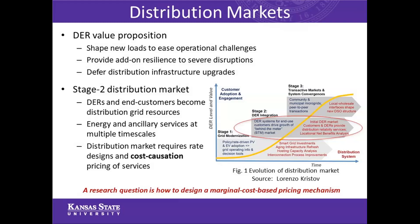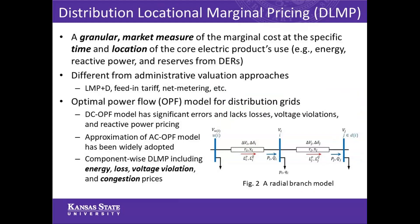To date, DER value proposition does not yet quantify major benefits and values. DERs can shape new distribution-level flexible load to minimize challenges to system operation. DERs based on grid-forming inverters, such as solar and battery energy storage systems, can bring added resilience to the distribution grid to withstand severe disruptions. DERs can also avoid costly peak load transmission and distribution infrastructure and defer distribution-level infrastructure upgrades. The stage two distribution market is viewed as most useful for integrating renewable energy resources, where DERs and end customers become grid resources through the behind-the-meter market.